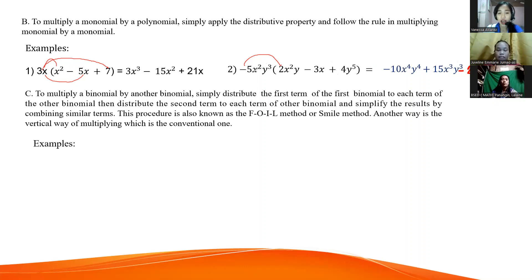Next, 5 times 4, what's that? Very good. Negative 20. Next, x squared times, it's the same as here, so just copy it. Next, y to the power of 3 times 5, what's that? Very good. y8.